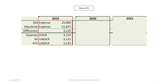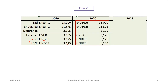In 2019, the expense taken was $25,000; it should have been $21,875 — a difference of $3,125. Depreciation expense is overstated by $3,125, net income understated by $3,125, and retained earnings understated by $3,125. In 2020, the same problem: expense overstated by $3,125, profits understated by $3,125, and retained earnings is now understated by $6,250 cumulatively because of the previous year's understatement plus the current year.